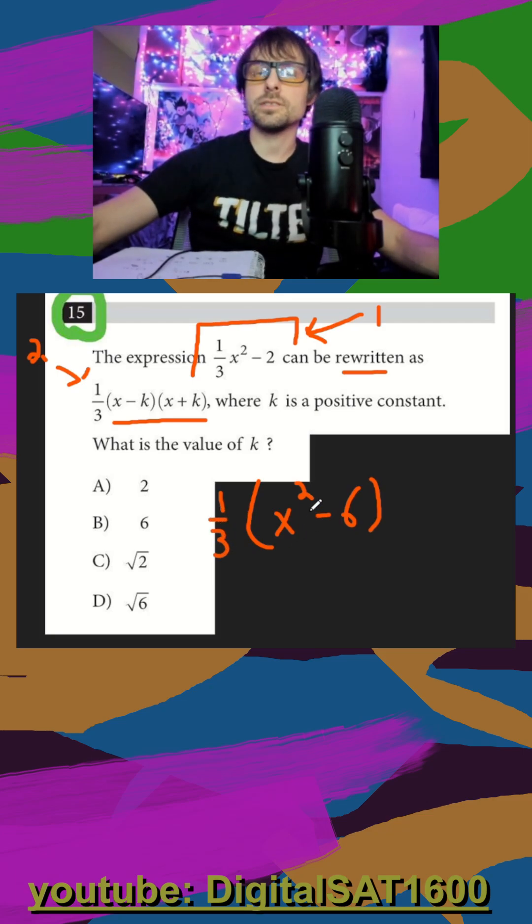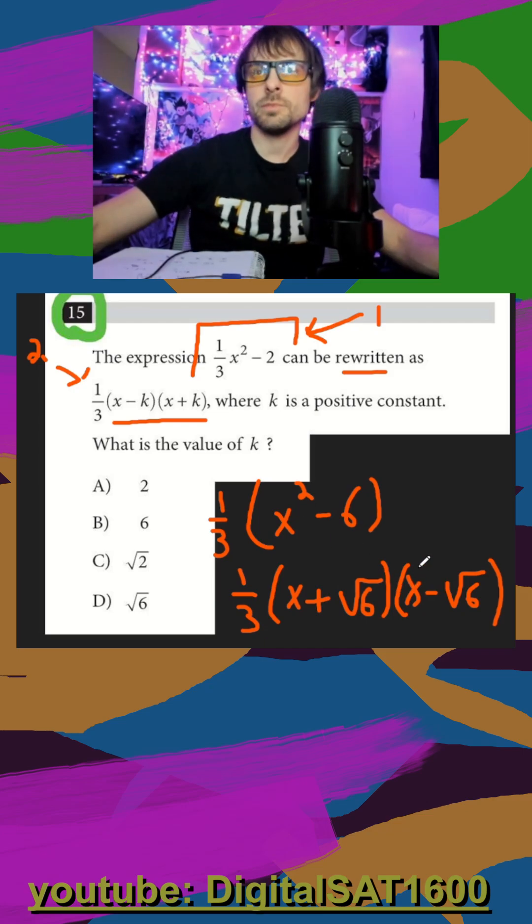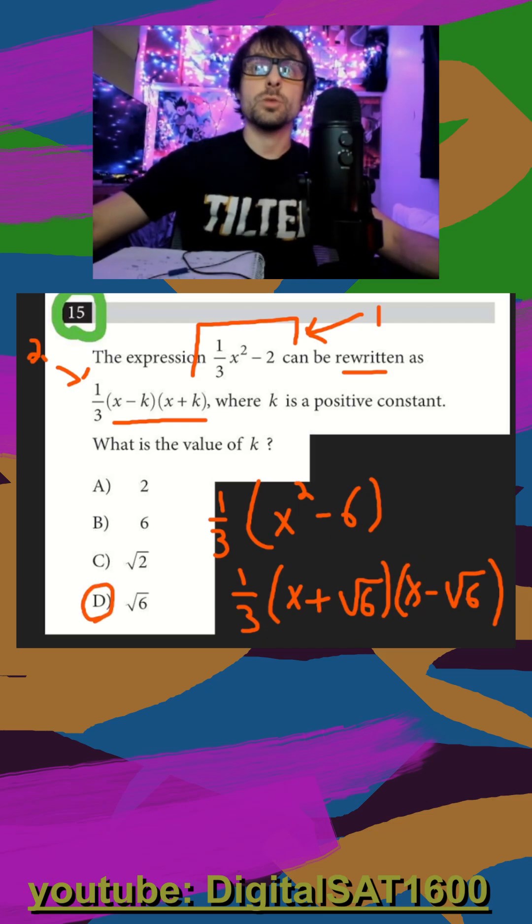And then I set a difference of squares. While six isn't a perfect square, you can see that we do have some square roots in our answers. All we have to do is x plus the square root of this, and then x minus the square root of this. And then the one third is still on the outside. And you can see that k is just going to be the square root of six.